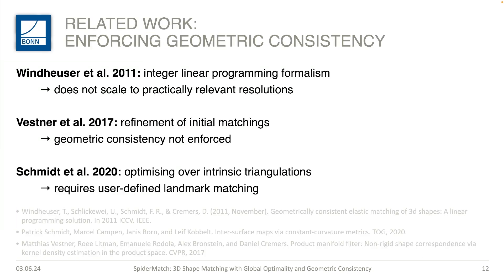There are lots of related works which try to enforce geometric consistency. The approach by Windholz et al. from 2011 proposes a quite elegant integer linear programming formalism, but unfortunately does not scale to practically relevant resolutions. The approach by Wessner et al. from 2017 proposes to refine initial matchings, yet does not consider geometric consistency as a hard constraint. The approach by Schmidt et al. optimizes over intrinsic triangulations on both shapes with geometric consistency as a hard constraint, but requires user-defined landmark matchings as input, and those are usually not available.